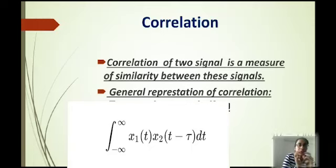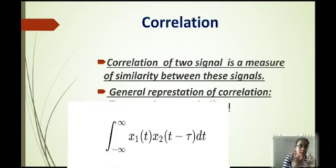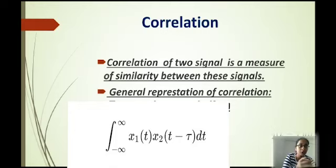If there is a similarity between two signals then correlation exists, and if there is no similarity between two signals then the correlation is zero. So if we compare or measure the similarity between two signals x1 and x2, we use the integral equation.